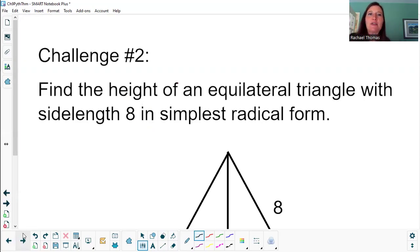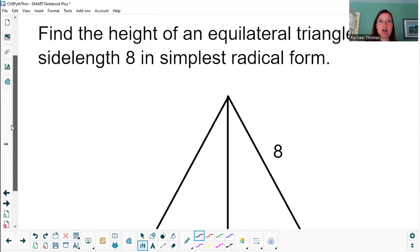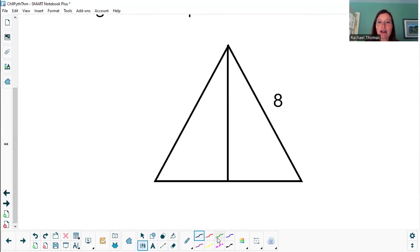All right, second challenge. So now we've got an equilateral triangle, and its side lengths are all eight. And I would like to find basically all three sides of this right triangle that I get over here. I think the question I worded was, I would like to find the height of this equilateral triangle. So let's go ahead and do that.